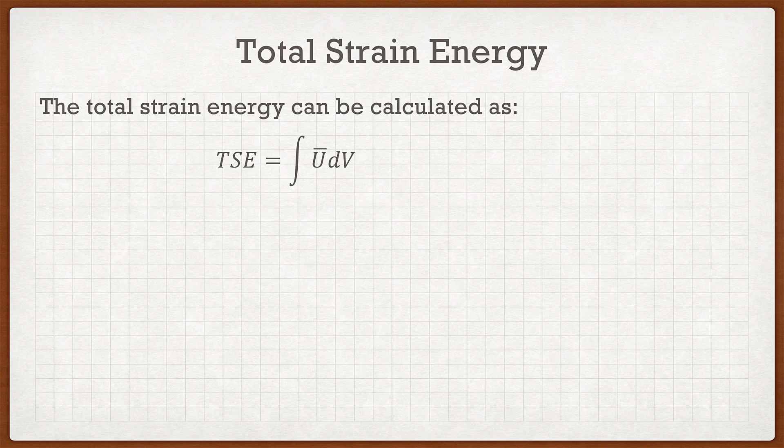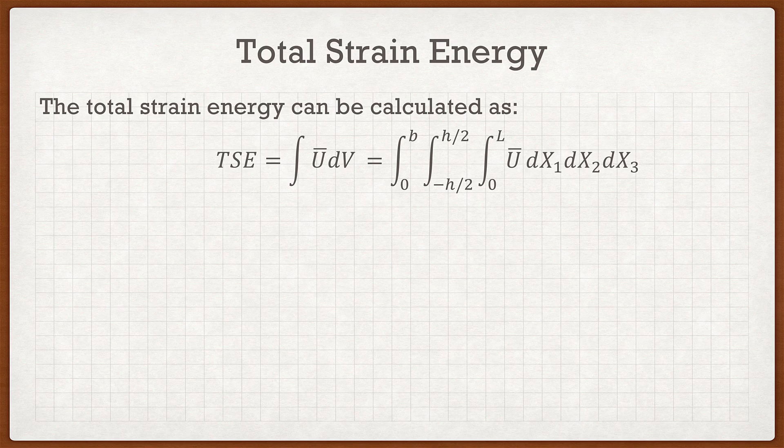Let's start with the definition of total strain energy. Before we dealt with strain energy density — that's the U with the bar on top — but now we're talking about total strain energy, which is the integral of the strain energy density over the volume of the beam. We can simplify this triple integral: the first integral goes from 0 to B in the x3 direction, the second from negative h/2 to h/2 in the x2 direction, and the third from 0 to L along the length in the x1 direction.